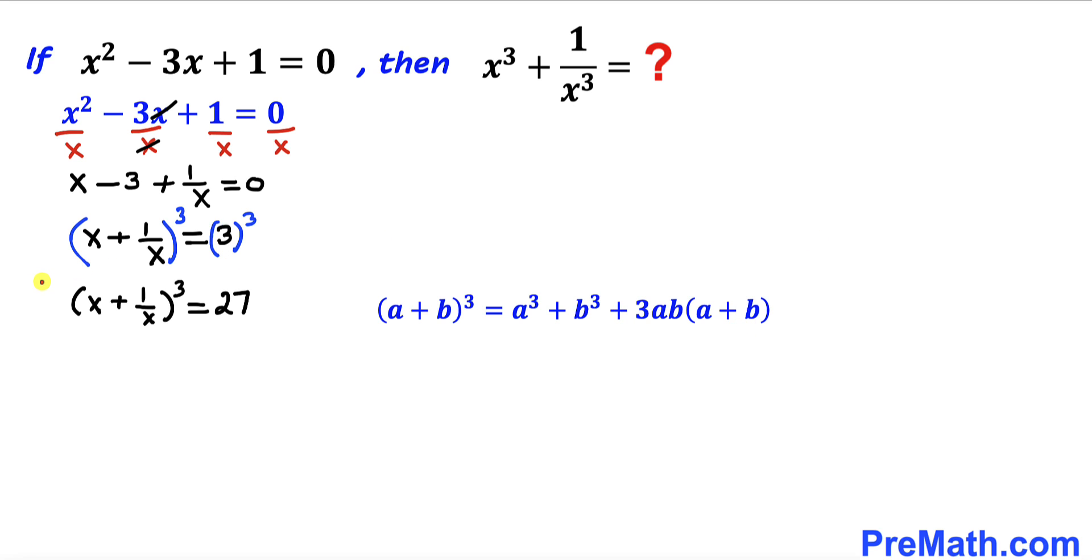We are going to apply it on the left hand side of this equation. Let me go ahead and call this as our a and this as our b. Then our left hand side is going to become x power 3 plus 1 divided by x power 3 plus 3 times x times 1 over x times x plus 1 divided by x equals to 27 on the right hand side.